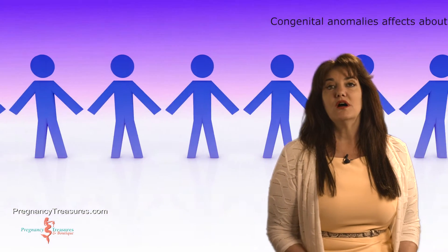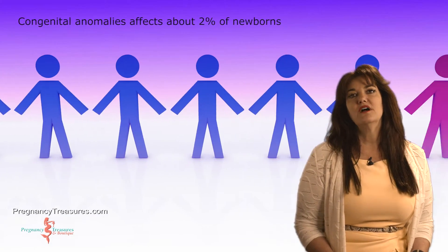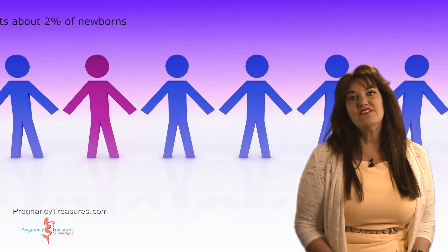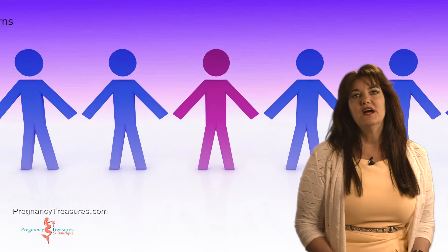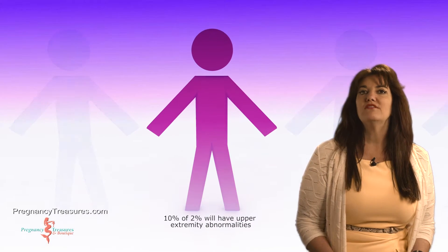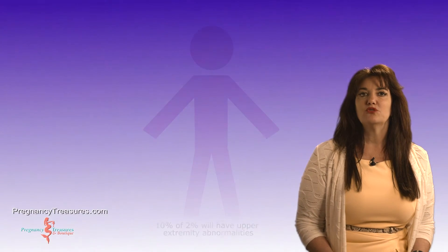Congenital anomalies account for about 2% of newborns, and out of that 2%, about 10% will have upper extremity abnormalities. Congenital limb is second most to congenital heart disease in birth malformation. Most anomalies occur spontaneously or they are inherited.